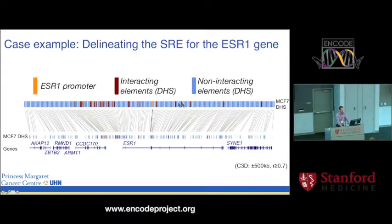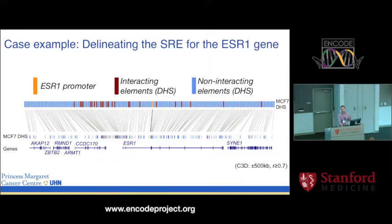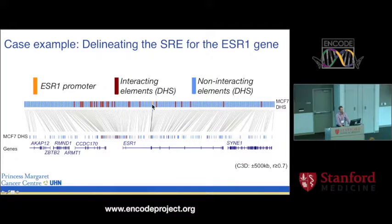Zooming in on the DHS sites, they're color-coded differently. The orange one is the promoter for the ESR1 gene, based on its position at the TSS. Red and blue DHS sites are discriminated based on whether they're predicted to physically interact with the promoter of the ESR1 gene — predicted by cross-correlation in cell types for DNase I hypersensitivity, which was shown to be a good approach for predicting physical interaction in 3D space. The red sites define the set of regulatory elements for the ESR1 gene, while blue ones are DHS sites not predicted to physically interact with the ESR1 promoter.